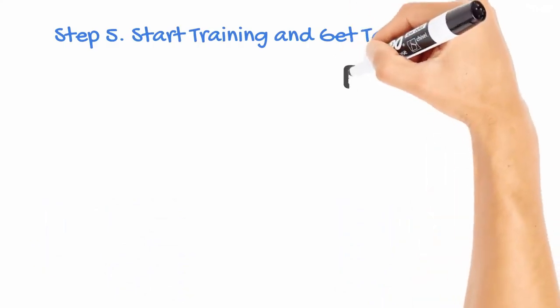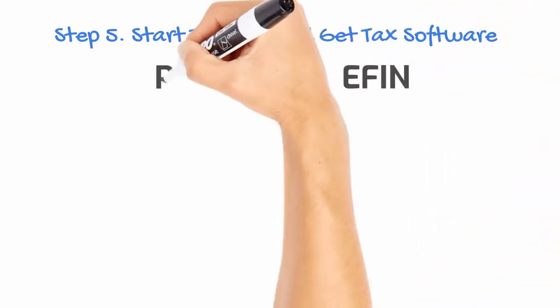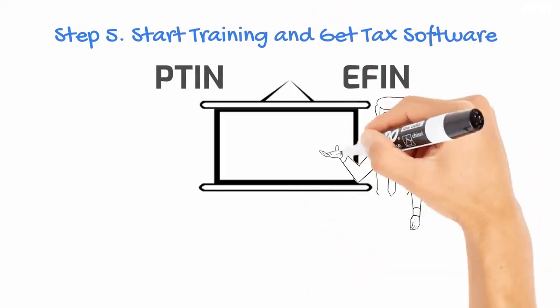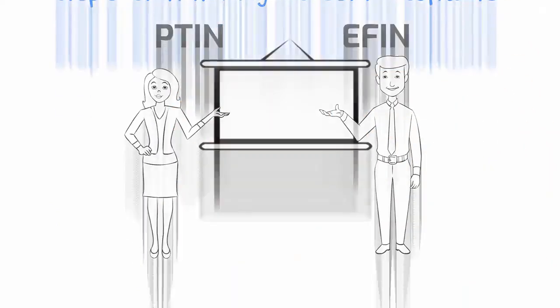Step 5. Start training and get tax software. Once you receive your PTIN and are waiting on your EFIN, you will start our Training Academy program and tax software will be provided to you.